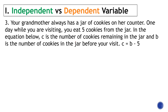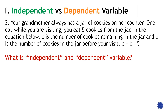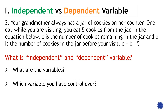Your grandma always has a jar of cookies on her counter. One day while you are visiting, you eat five cookies from the jar. In the equation C = B − 5, C is the number of cookies remaining in the jar and B is the number of cookies before you visit. B is our independent variable, and whatever value B has will determine the value of C, so C is our dependent variable.